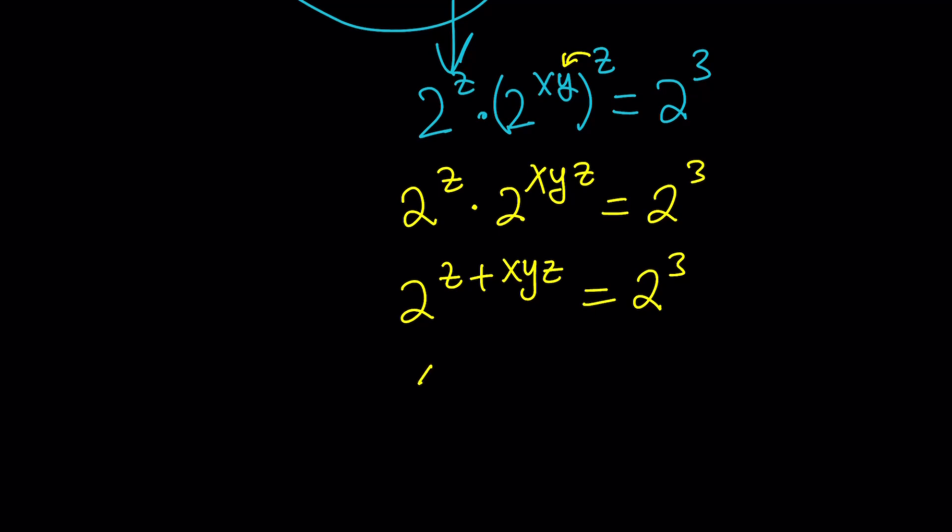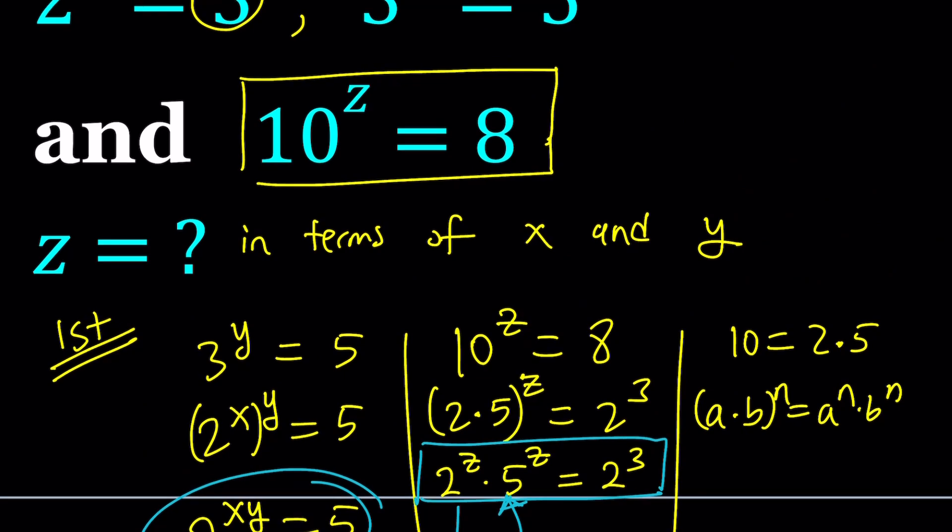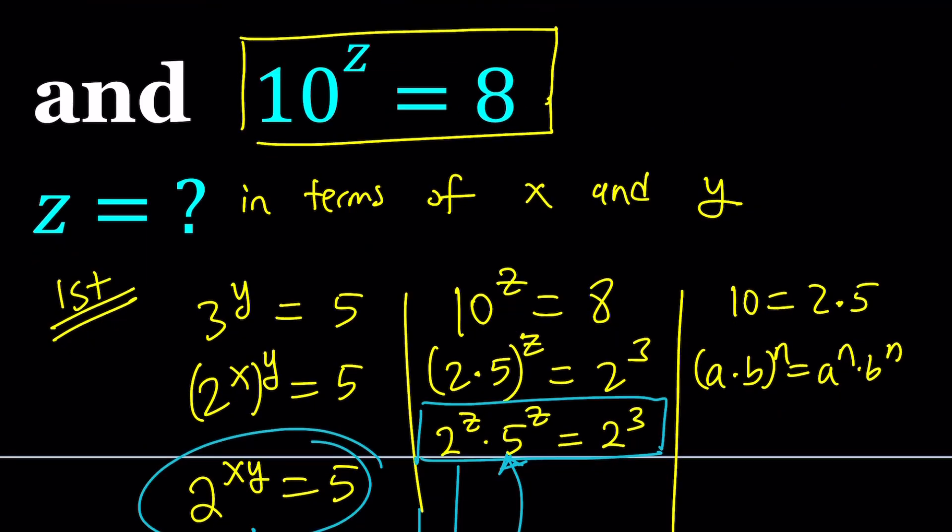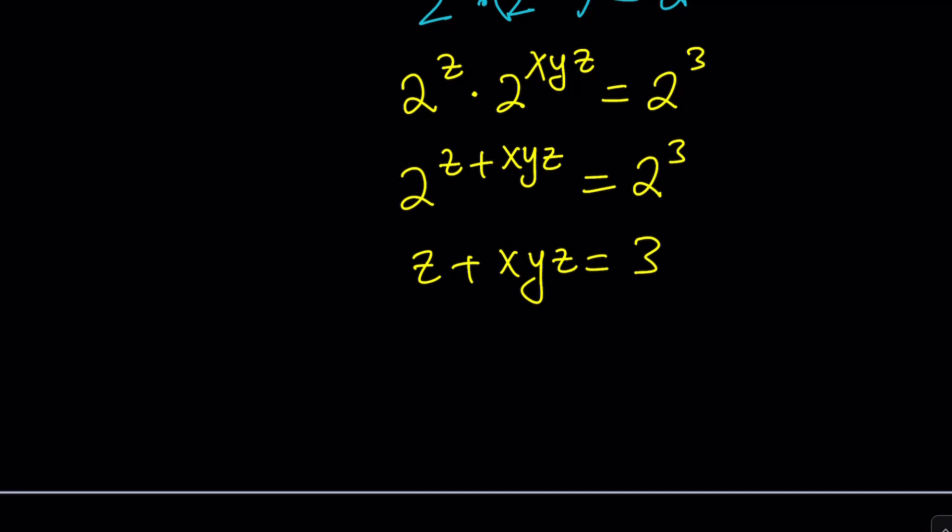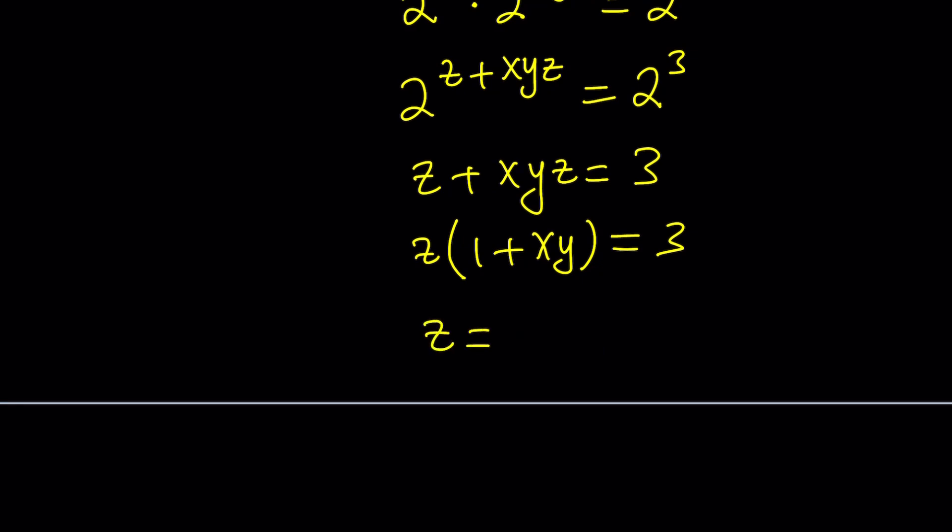So, now we can say z plus xy z is equal to 3. Awesome. Remember, our goal. Always keep that in mind. We're trying to solve for z in terms of x and y. That's our goal. So, here, we're so close, all we have to do is take out a z, factor it out. And then, divide both sides by 1 plus xy, and you're done.